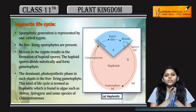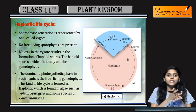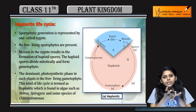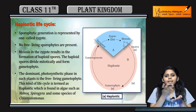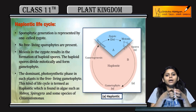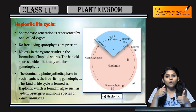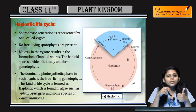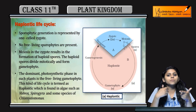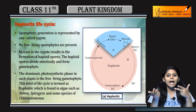The alternation of generation happens in the haploid stage, the diploid stage, and in the haploid stage in any plant's life cycle. This alternation of generation involves the haploid phase, diploid phase, and haplodiplontic life cycle.